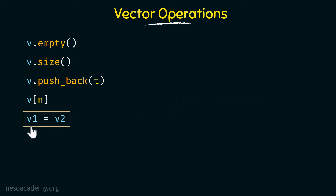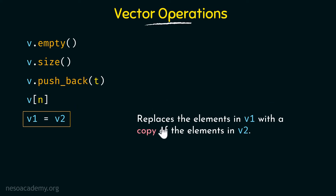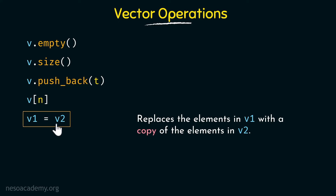Now we have v1 = v2. What this does is it replaces the elements in v1 with a copy of the elements in v2. Both v1 and v2 are vectors, and whatever elements are in v2 will be copied to v1, replacing all existing elements of v1.